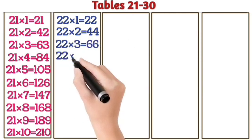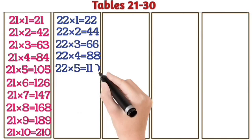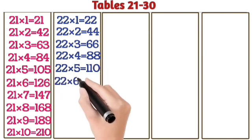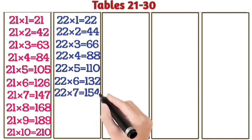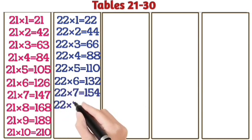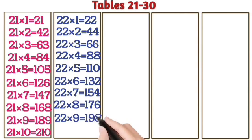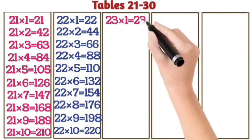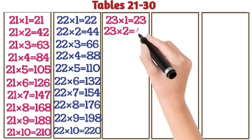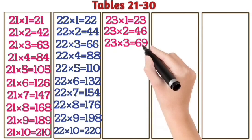22 ones are 22. 22 twos are 44. 22 threes are 66. 22 fours are 88. 22 fives are 110. 22 sixes are 132. 22 sevens are 154. 22 eights are 176. 22 nines are 198. 22 tens are 220.